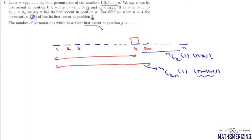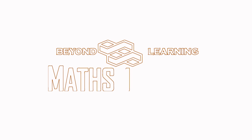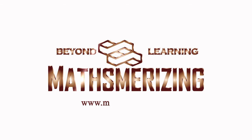The number of permutations which have their first ascent at position k is given by the permutations where the first k numbers are in descending order, minus those where the first k+1 numbers are in descending order. The final answer is: C(n, k) · (n - k)! minus C(n, k+1) · (n - k - 1)!